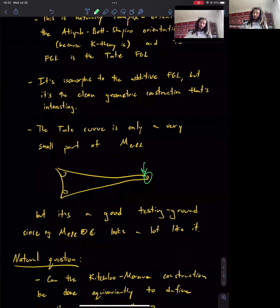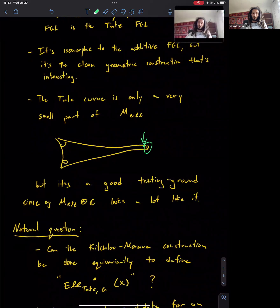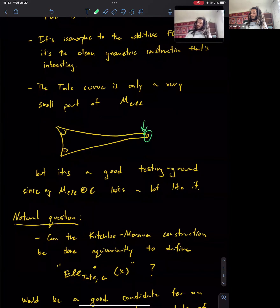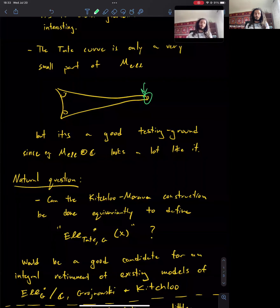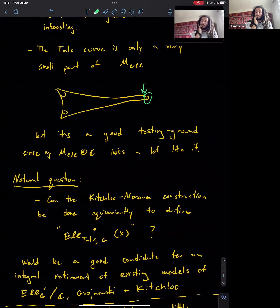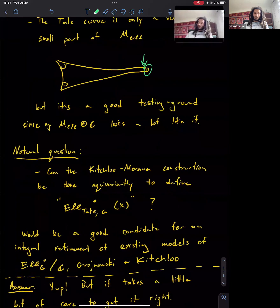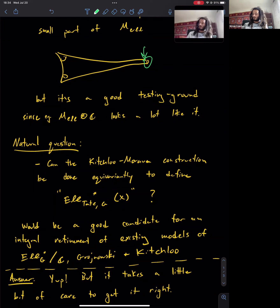Given that there's this very simple Kischlu-Morava construction of elliptic cohomology at the Tate curve, the natural question is: can we do the Kischlu-Morava construction equivariantly? If we can do that, we would have something we could call equivariant elliptic cohomology at the Tate curve. Moreover, we would have an integral definition of equivariant elliptic cohomology, which in good cases one would hope would refine the definitions of Grojnowski and Kischlu mentioned in Charles's talk, which are defined over the complex numbers. The short answer is yes, you can do the Kischlu-Morava construction equivariantly, but it does take a little bit of care to get it right, and once you do, it has all the properties you might want.